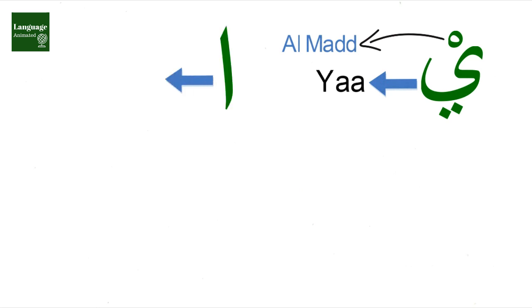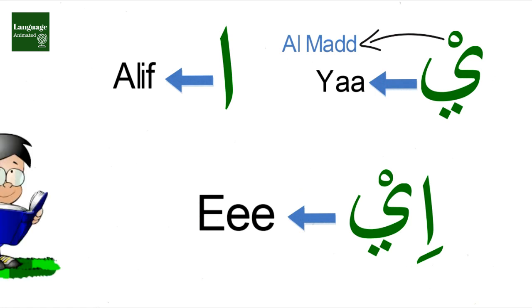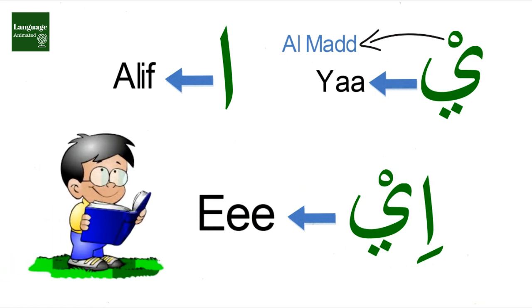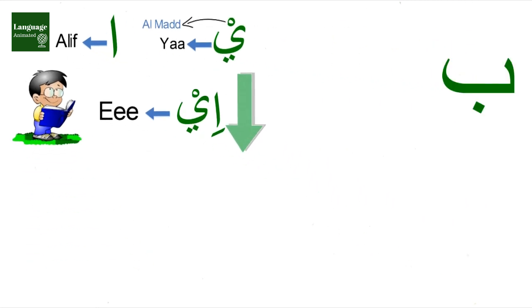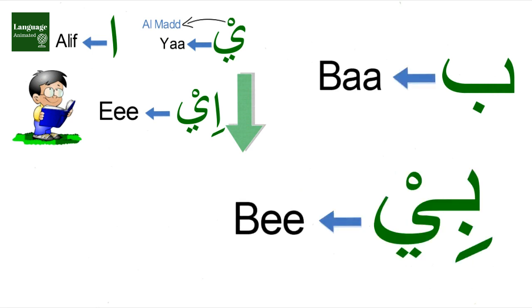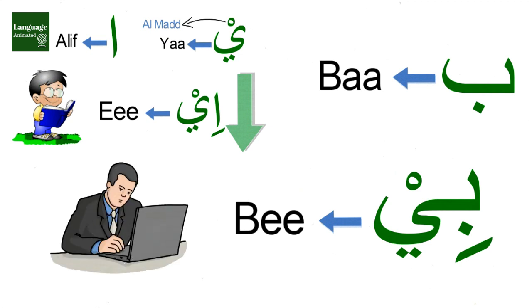This is ya and this is al-mad, so I use alif with it and it makes the 'E' sound. Don't worry — if any letter comes instead of alif, that will also sound from up to down. This is ba and it makes the sound 'B' with ya al-mad. All the letters sound from up to down with ya al-mad. Now I will use it with all the letters.